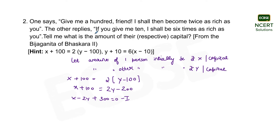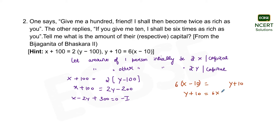The other person replied, 'If you give me ten, I shall be six times as rich as you.' This means ten is given by the first person to the other, so the first person's amount becomes x − 10 and the other person's amount becomes y + 10. Since the other person holds six times the amount of the first person: y + 10 = 6(x − 10), which simplifies to 6x − y − 70 = 0. This is the second linear equation.